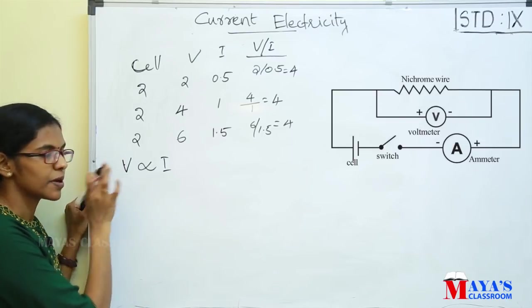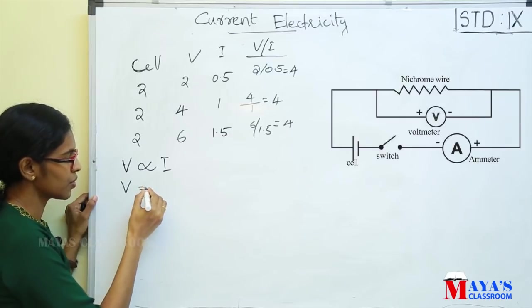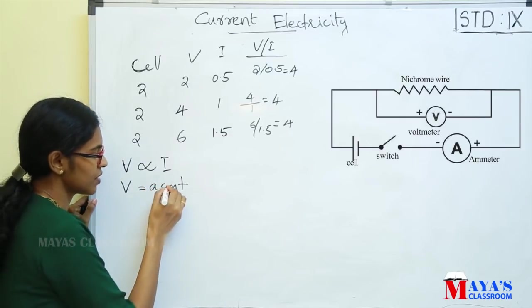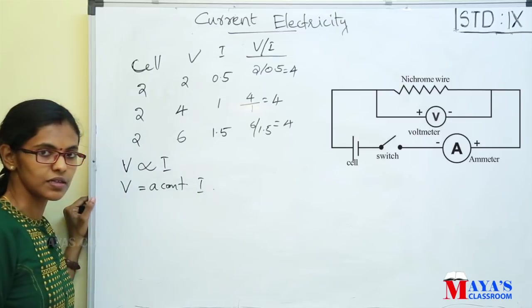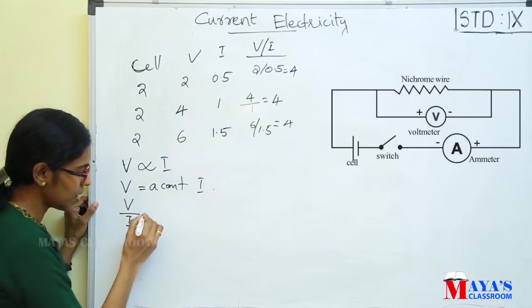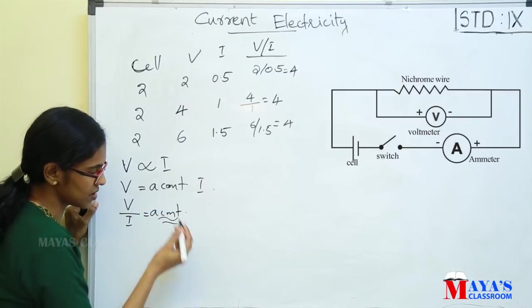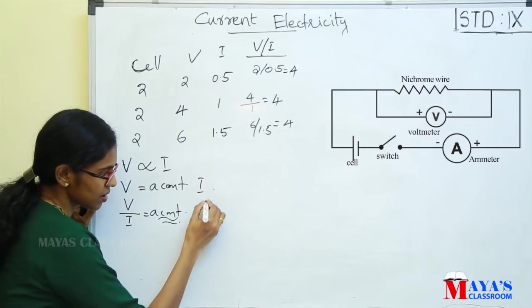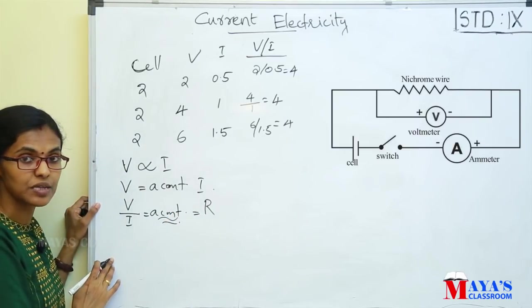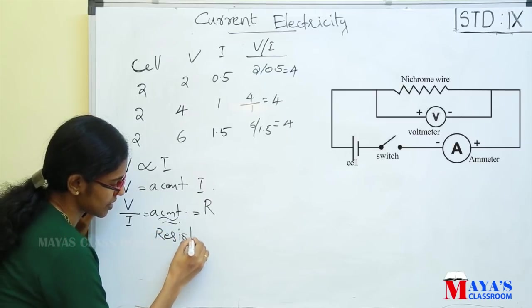Now, if we remove the proportionality sign, we multiply by one constant. So V equals that constant into I, meaning V by I equals a constant. We represent that constant as capital R.